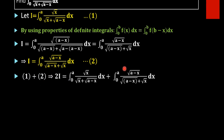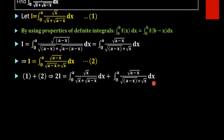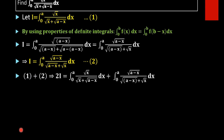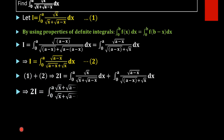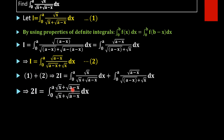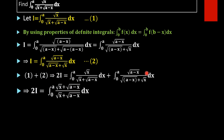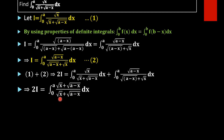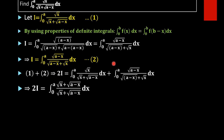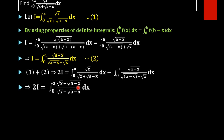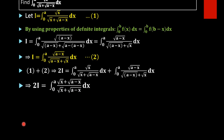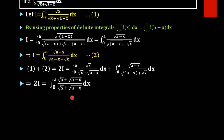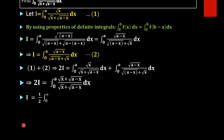Equation one is root x over root x plus root(a minus x), and equation two is root(a minus x) over root(a minus x) plus root x. Adding these two, we take LCM as the denominator root x plus root(a minus x). The numerator becomes root x plus root(a minus x), giving 2i equals integral 0 to a of root x plus root(a minus x) divided by root x plus root(a minus x) dx. The numerator and denominator cancel.